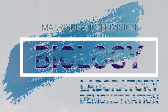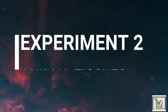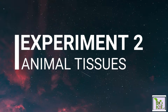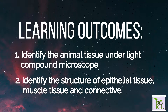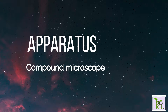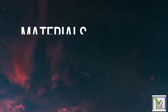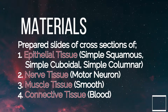Let's do Experiment 2: Animal Tissue. These are the learning outcomes, and these are the apparatus and materials.